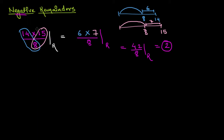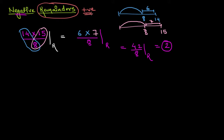Now let us try to solve the same problem using the concept of negative remainders. By definition, mathematically, we know that remainders are always positive. Even if we divide a negative number by a positive number, the remainder will still be positive.